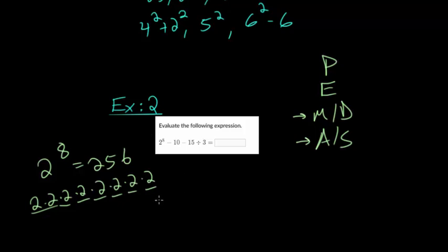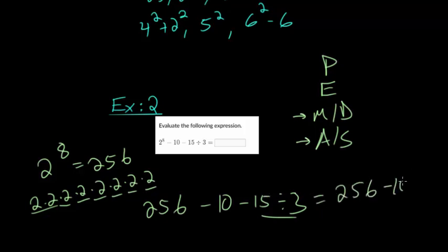And then if we rewrite this, we have 256 minus 10 minus 15 divided by 3. So then after exponents, we go to multiplication and division. There's only one expression here that contains either multiplying or dividing. So we can do 15 divided by 3, which is 5. So you get 256 minus 10 minus 5.